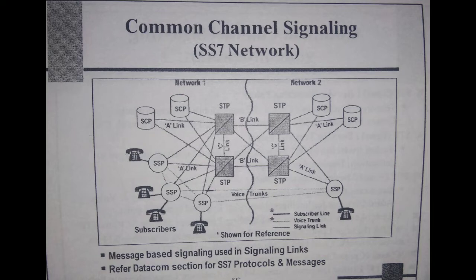SS7 is primarily used within the PSTN network. CCS is a packet-switched common network effectively used for transfer of data and voice on separate paths. SS7, or Signaling System Number 7, is a signaling protocol used for the setup and teardown of calls. Teardown means ending the call and returning to the initial state.